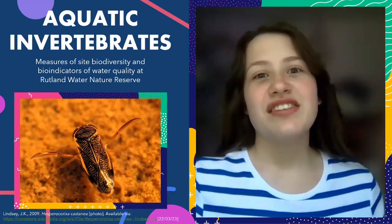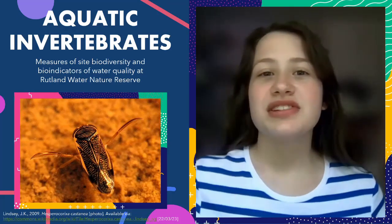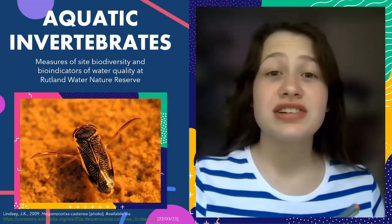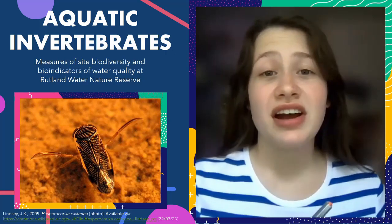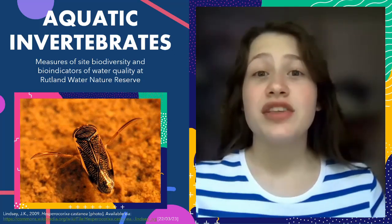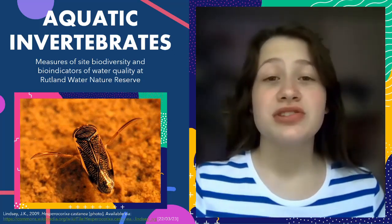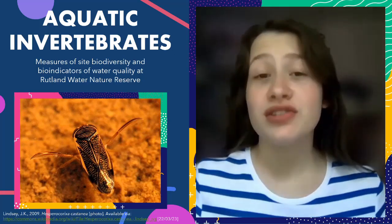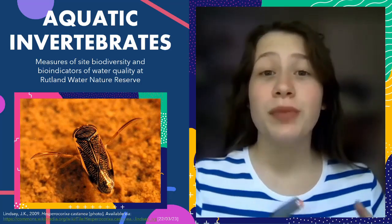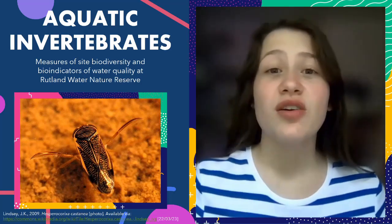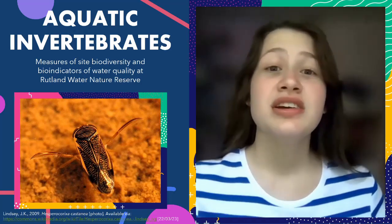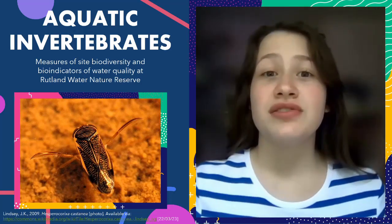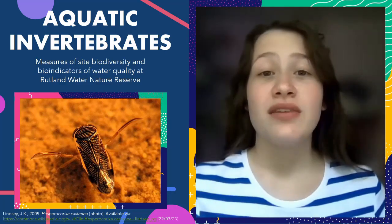Hi, my name is Sophie and today I'm going to be discussing aquatic invertebrates, like the Corixidae on the screen right now, and how they can be used as measures of site biodiversity or as biological indicators, or bio-indicators, of water quality — more specifically at the Leicestershire Wildlife Trust site at Rutland.